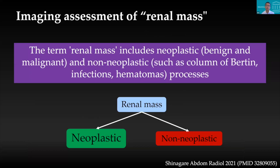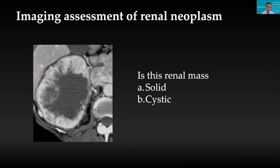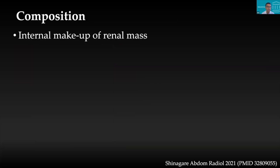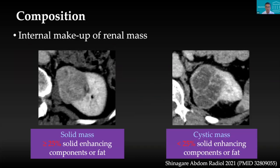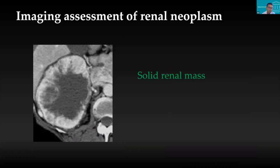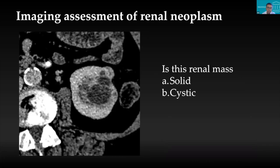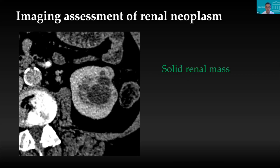Anytime you see a renal mass, it may be neoplastic (benign or malignant) or non-neoplastic. As radiologists, the first question is: is this a neoplastic lesion? If so, the next question is: is it solid or cystic? For composition: a solid mass has at least 25% solid enhancing components or fat; a cystic mass has less than 25% solid enhancing components. A peripheral rind of enhancing tumour confirms a solid mass. There was an example with cystic areas alongside an ill-defined enhancing component — that was also a solid renal mass with more than 25% solid enhancing component.